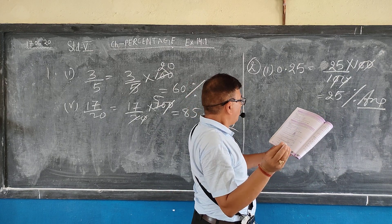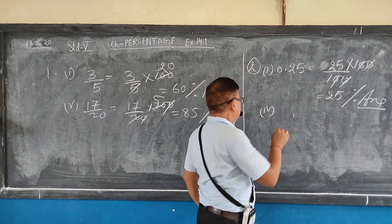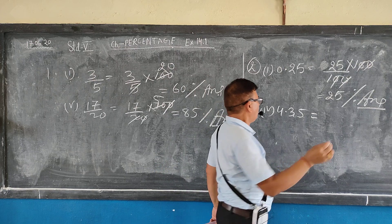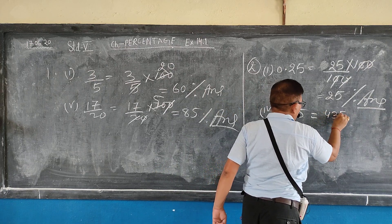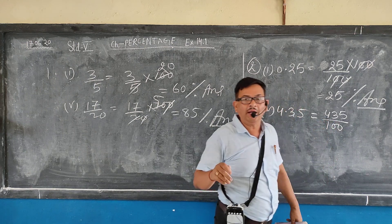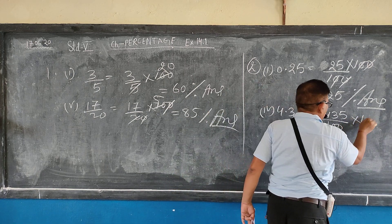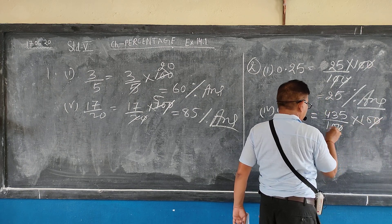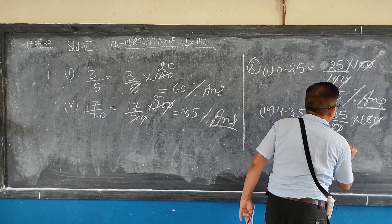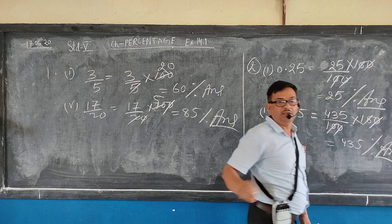Now question number 4.35: change into percent. So 4.35 — after the decimal there are 2 digits. To change into percent, multiply with 100. The zeros cancel, and the result is 435 percent. This is your answer, understood.